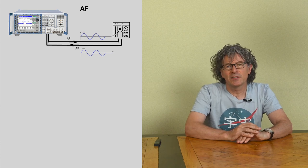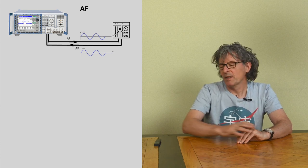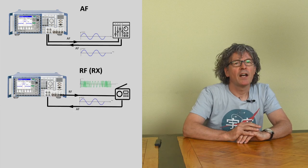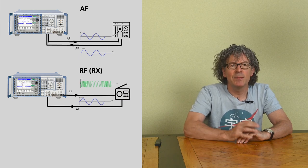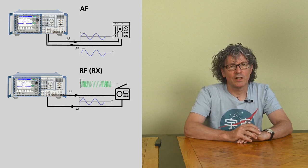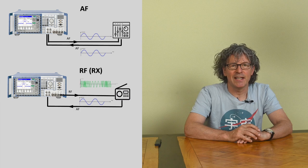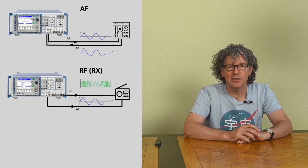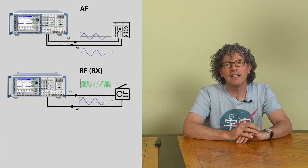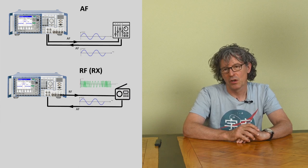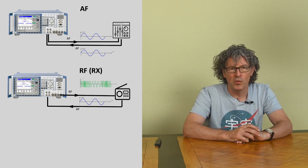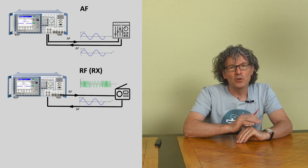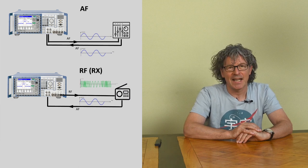The second mode is what I'd call the RX measurements — the receiver measurements. Here the CMU works as an audio generator as well as a transmitter: it creates a modulated FM signal, and the device under test is a receiver — a regular FM radio, CB device, or similar. The audio signal is then returned to the CMU and analyzed, so we're doing receiver testing.